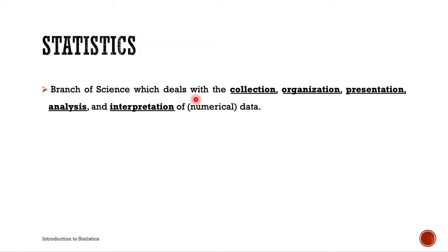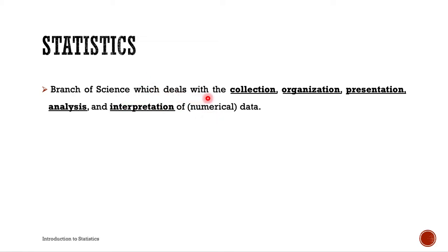So, what does statistics deal with? There are five main words. First: collection. Second: organization. Third: presentation. Fourth: analysis. And fifth: interpretation of data — specifically numerical data. So, statistics is a branch of science or mathematics which deals with the collection, organization, presentation, analysis, and interpretation of numerical data.